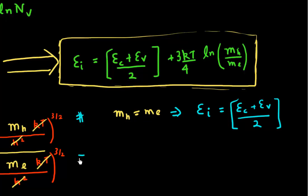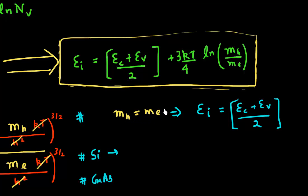But let's look at common semiconductors we actually use. We'll evaluate this for silicon and for gallium arsenide. For silicon, we'll look up the effective density-of-state masses for electrons and holes, evaluate the correction term, and determine how far from the mid-band gap the Fermi level sits, and whether it shifts toward the conduction band or the valence band.